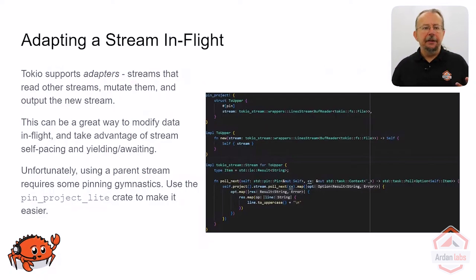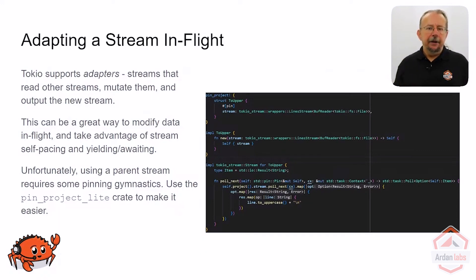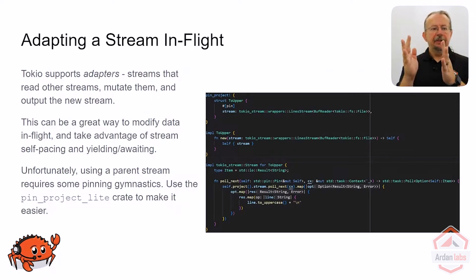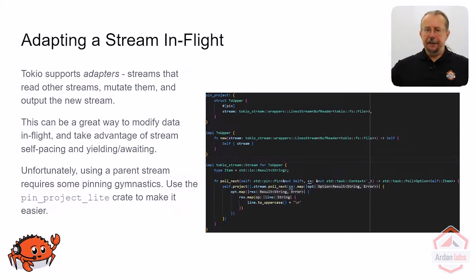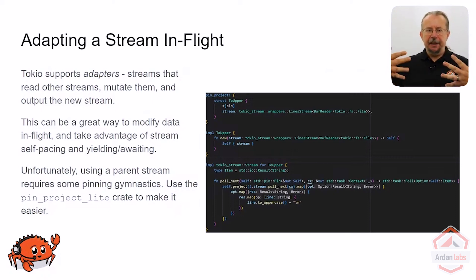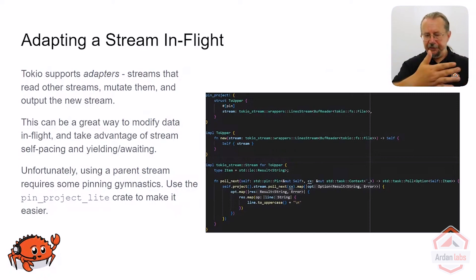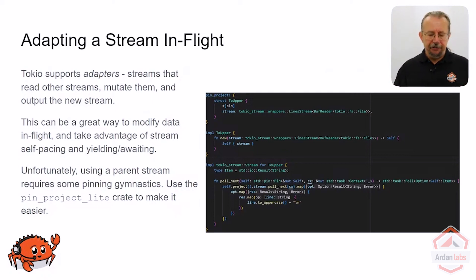One thing that I frequently do is have data coming into the stream that's not quite the data I want, so I want to adapt it in flight. Tokio calls this an adapter — it's a stream that takes a stream as an input, does something to it in flight one step at a time, mutates it, and outputs it as a new stream. This remains relatively self-pacing because, for example, if you're feeding it as a result to a web browser, the browser runs at the speed of the slowest item, which is probably the network. So each call to the next entry in the stream becomes self-pacing — it's a great model to get just as much throughput as your customer needs.